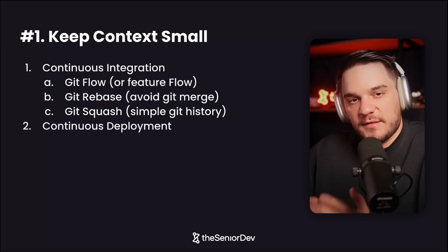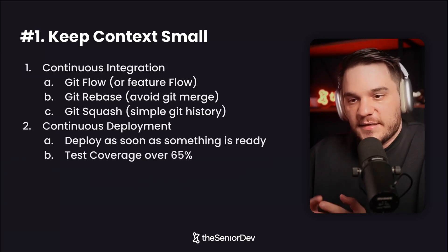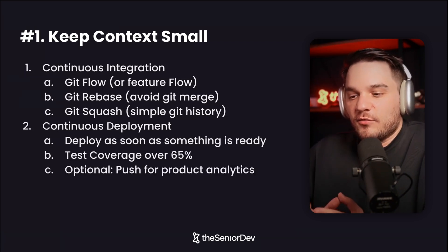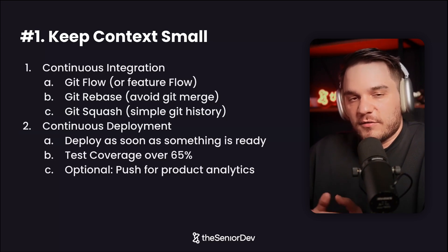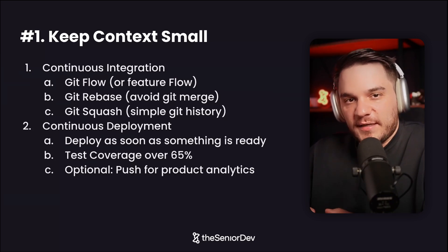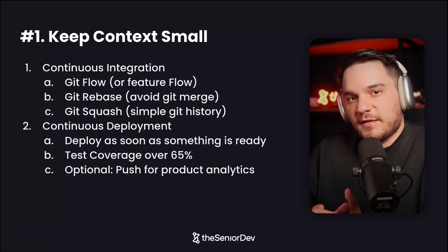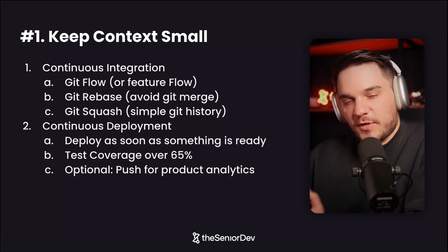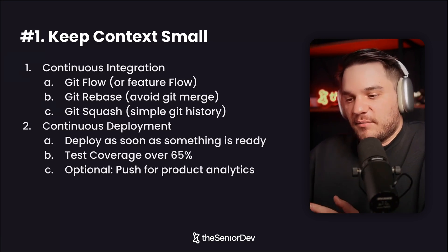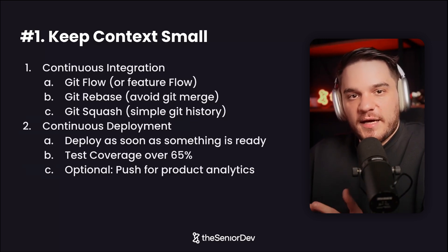Make sure you implement continuous deployment — release things as soon as they are ready. Of course, if you want to keep quality high, you'll need to write a lot of tests, aiming for test coverage over 65%. Optionally, push your product team for analytics. If you're building software, you really want to know if users use a feature and how much they use it, because you're just making hypotheses. We live in a world where it's easier and easier to create a compelling case for a feature, so you might feel pressured to build things. Bring an empirical mindset — put product analytics on any feature you build so your team can make better choices.